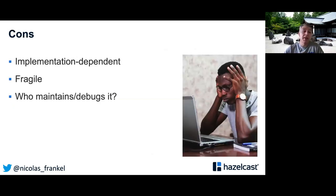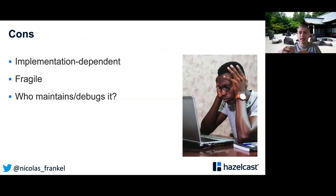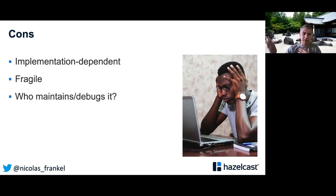The problem is it's implementation-dependent — I used MySQL as an example, but Oracle, Postgres, and others may differ. It's also super fragile: if something goes wrong, where does the bug come from? Is it the library, the system command, or the trigger? It's very hard to debug. If you've done microservices, you know that without proper monitoring, it will be impossible to debug. Here it's the same, but you're constrained by the tools.